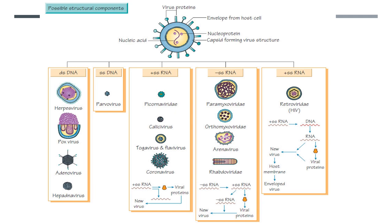Single-stranded linear DNA, 4 to 6 kilobases in size, is found in members of the parvovirus family, which comprises the parvo, the erythro, and the dependoviruses. Circular single-stranded DNA of only 1.7 to 2.3 kilobases is found in members of the circovirus family, which comprise the smallest autonomously propagated viruses.